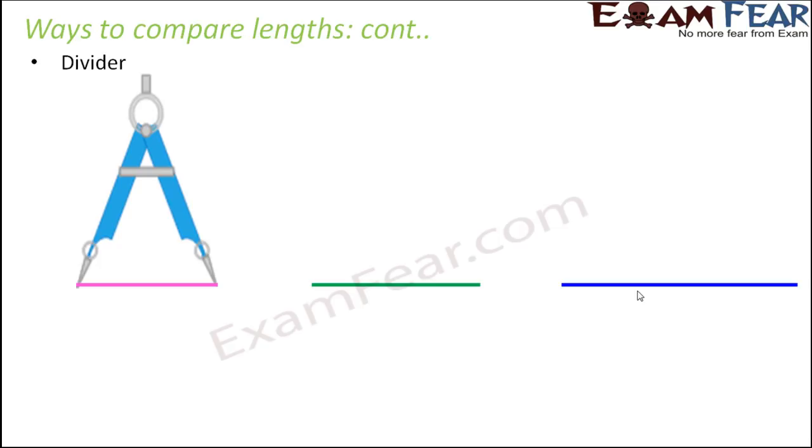So let's say that these are the three line segments given to you: the pink, the green, and the blue one. Now you have to compare their lengths. Now instead of using a ruler, what you do is you adjust the opening of the divider in such a way that the two ends of the divider are at the two end points of the line segment.